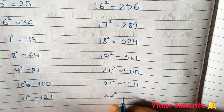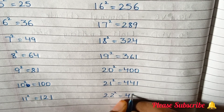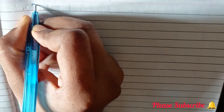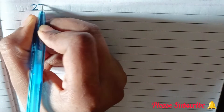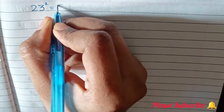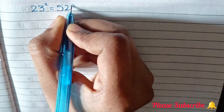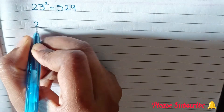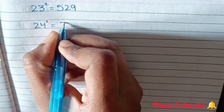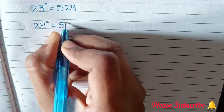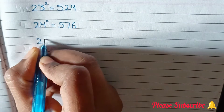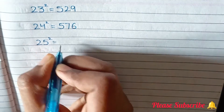21 square is equals to 441. 22 square is equals to 484. 23 square is equals to 529. 24 square is equals to 576. 25 square is equals to 625.